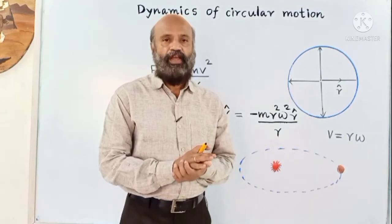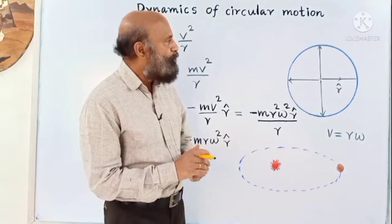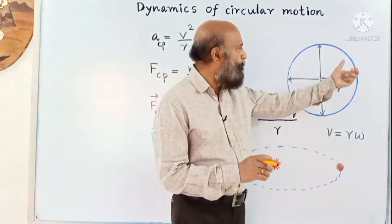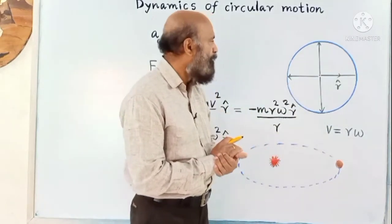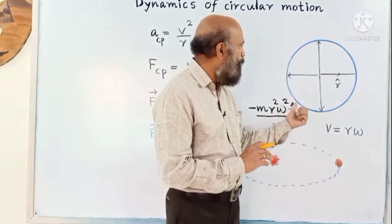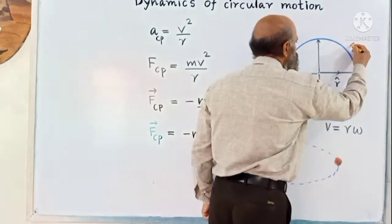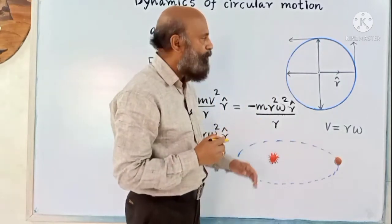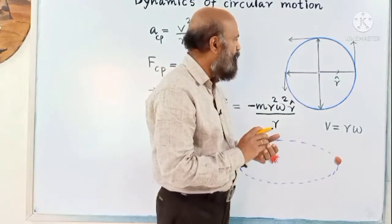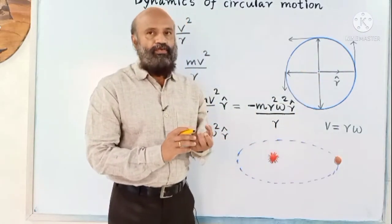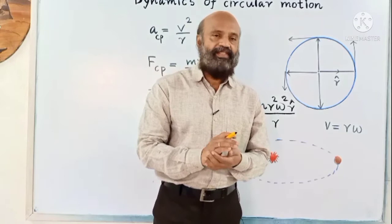According to Newton's first law, everybody continues in a state of rest or of uniform motion unless compelled by an external force. So if a body is to move in a circular path, a force is needed to change its direction. If a body is going in a circular path there is an acceleration directed towards its center. The velocity is continuously changing, so there is an acceleration known as centripetal acceleration. A body cannot undergo circular motion without force — that force is known as centripetal force.